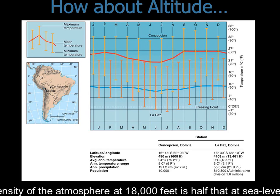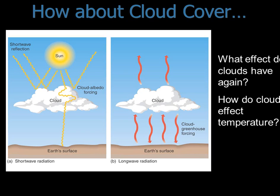Specifically, the density of the atmosphere at 18,000 feet is half of what it is at sea level. There are fewer molecules as you get higher, meaning fewer molecules that can absorb energy, so you don't get as hot. Here's a comparison: Concepción at about 1,600 feet elevation versus La Paz at 13,000 feet. Both are near the equator so they have similar temperature patterns throughout the year, but La Paz is quite a bit cooler because of its higher altitude.